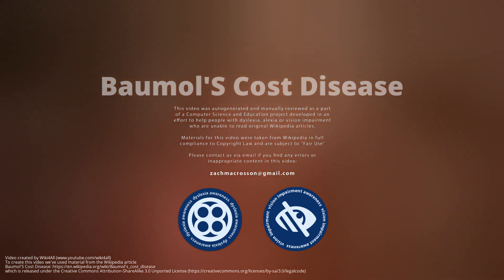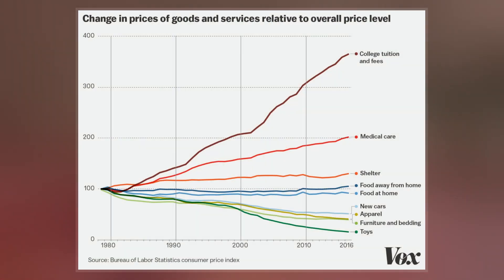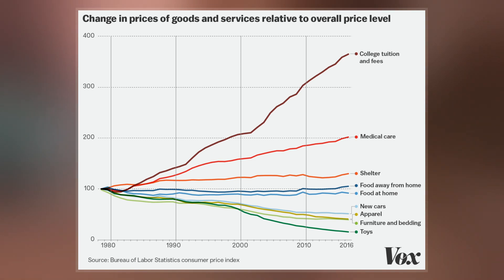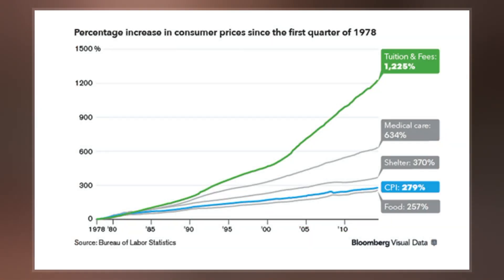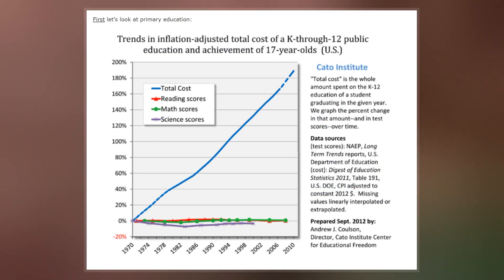Baumol's cost disease is the rise of salaries in jobs that have experienced no or low increase of labor productivity, in response to rising salaries in other jobs that have experienced higher labor productivity growth. The phenomenon was described by William J. Baumol and William G. Bowen in the 1960s and as an example of cross-elasticity of demand.